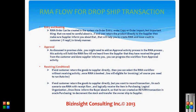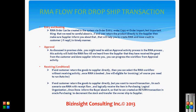An RMA order can be created in the system via order entry, order copy, or order import. The important thing to be careful about is: if the end user returns the product directly to the supplier, make sure that the supplier informs you about that. This will help you to create the RMA and issue credit to the customer in time.